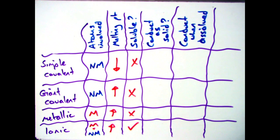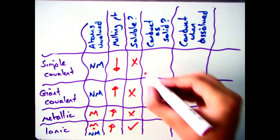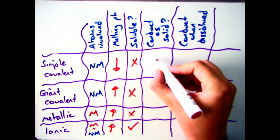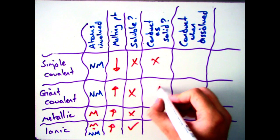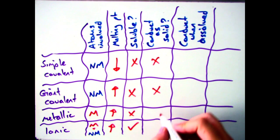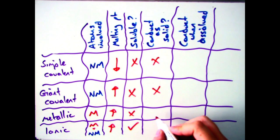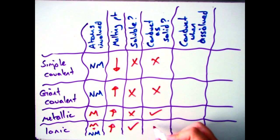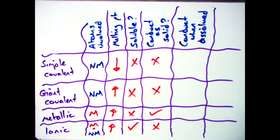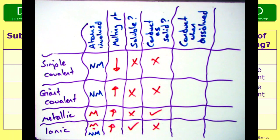If we move on to conducting as a solid, the key rule is that the only bonding type that will conduct when in solid form is metallic. Simple covalent, giant covalent and ionic compounds will not conduct when they are solid.